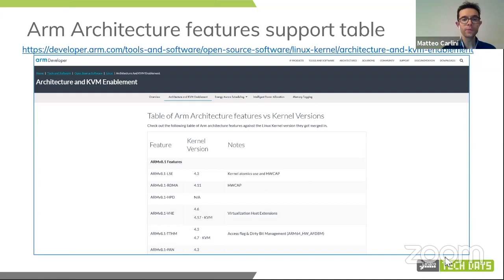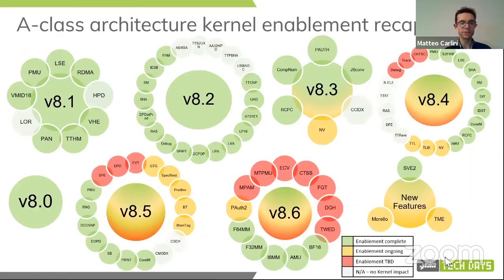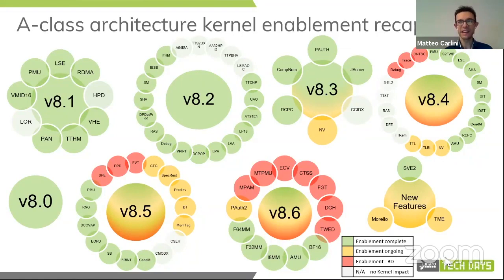I'd like to give a high-level view on the status of the architectural enablement we do in the kernel against the ARM architecture from 8.0 up to 8.6, and new features. This slide is not intended to dig into each specific architectural feature — you can look at the table offline. This is just to give you an overview of roughly where we are. 8.0 was the beginning of the ARM64 kernel, so everything is clear there. Then going clockwise top-left, 8.1 — everything done, nothing left to be done.